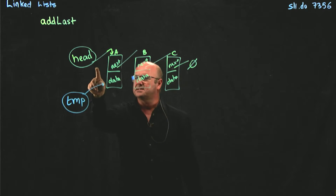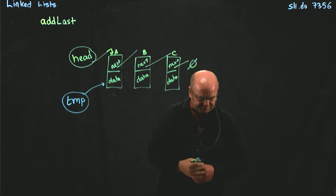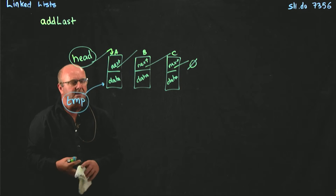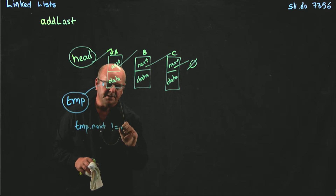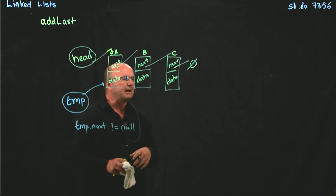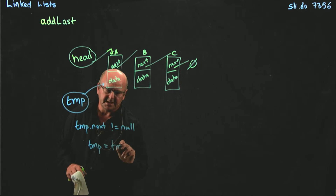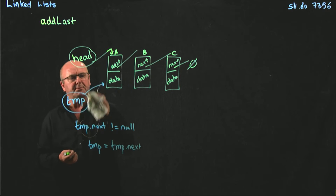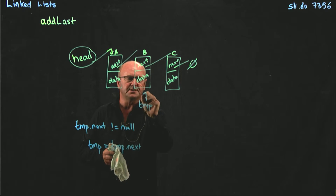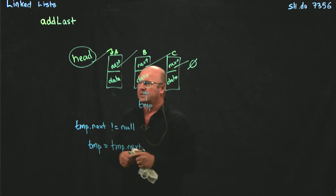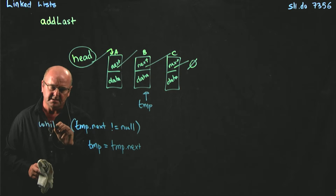So we start at the beginning of the list and we go through and we say, is your next pointing to null? We start at the beginning of the list with our temporary pointer and we ask, is temp.next not equal to null? Then we've got other nodes to go to. To get to the next node, we set our temporary pointer equal to temp.next.